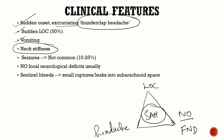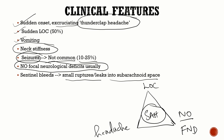The patient has neck stiffness because the subarachnoid blood irritates the meninges. Seizures are not a common presenting feature of SAH — only 10 to 25% have them, similar to intraparenchymal hemorrhage. Usually there are no focal neurological deficits, though subarachnoid blood can occasionally collect and compress local cerebral structures. Sometimes the patient has warning headaches called sentinel bleeds — small leaks into the subarachnoid space before full-blown rupture. This is a very important MCQ.